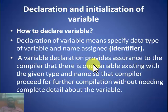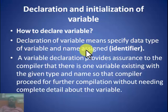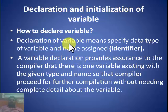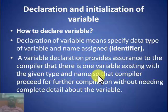First, we will look at declaration and initialization of variables — how to declare variables and how to initialize them. Declaration of a variable means specifying the data type of the variable and assigning it a name. A variable declaration provides assurance to the compiler that there is a variable existing with the given type and name, so that the compiler can proceed with further compilation.